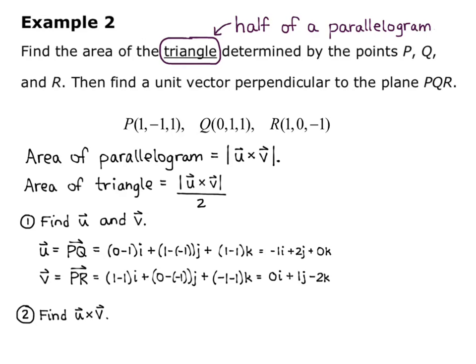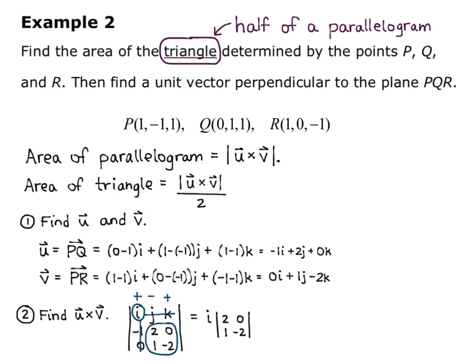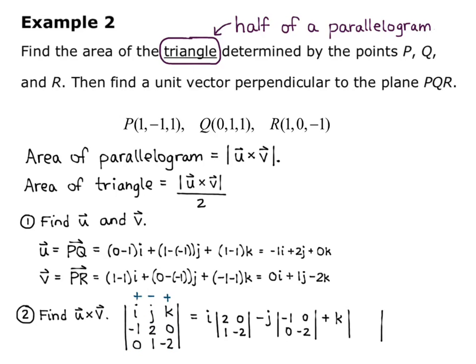Now we want to find u cross v. We set up the determinant with i, j, k in the first row, the components of u (-1, 2, 0) in the second row, and the components of v (0, 1, -2) in the third row. We expand along the top row with alternating signs plus, minus, plus. So we get i times det(2, 0; 1, -2), minus j times det(-1, 0; 0, -2), plus k times det(-1, 2; 0, 1). We'll continue this on the next slide.